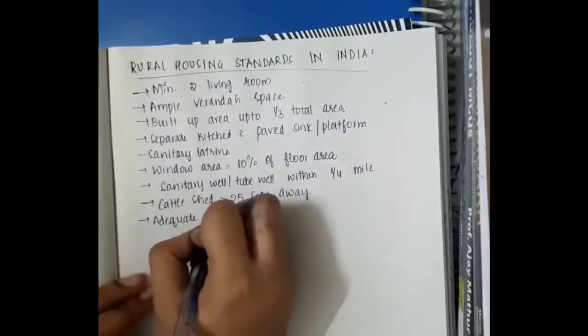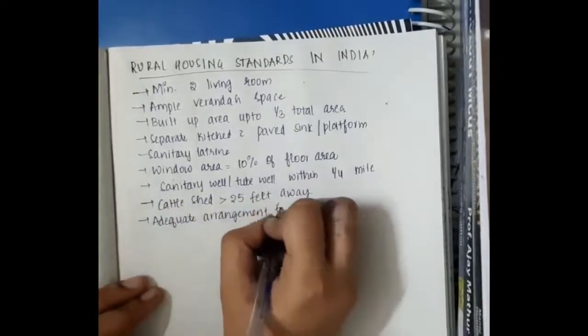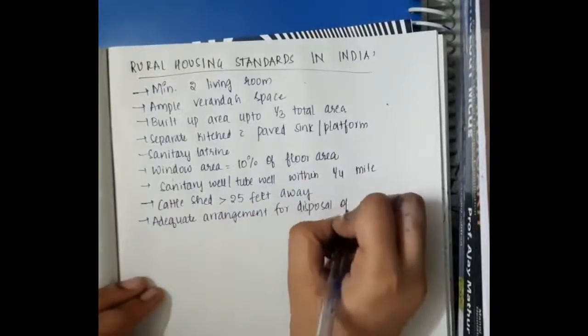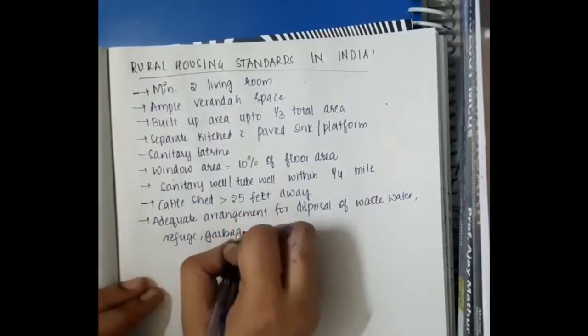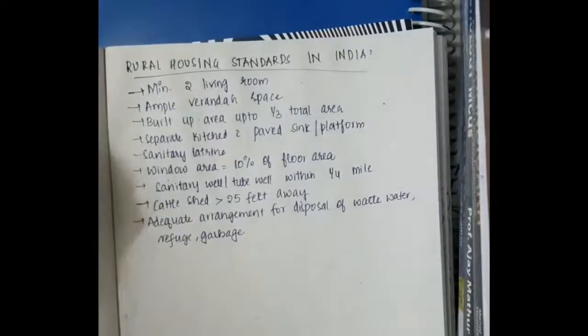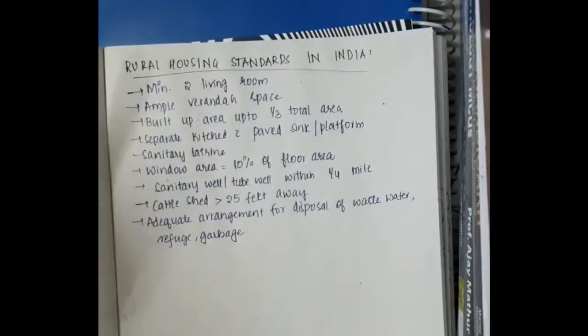Adequate arrangement for disposal of waste water or refuse or garbage should be present separately. So these are the rural housing standards in India. So this is about housing in India. Thank you for watching.